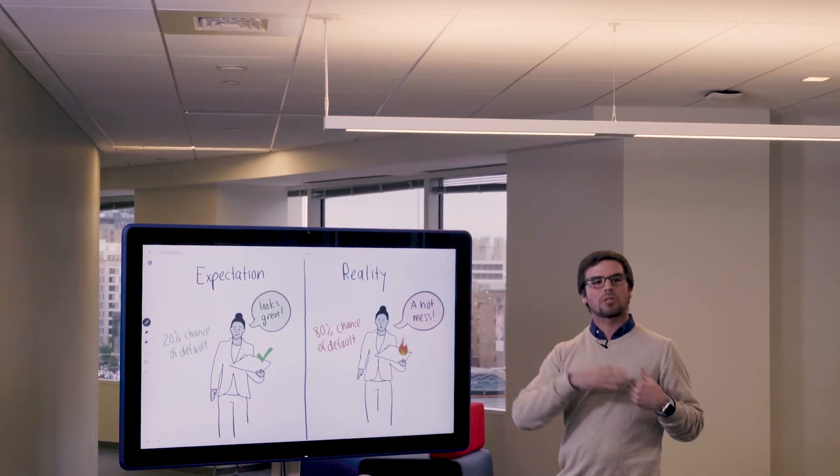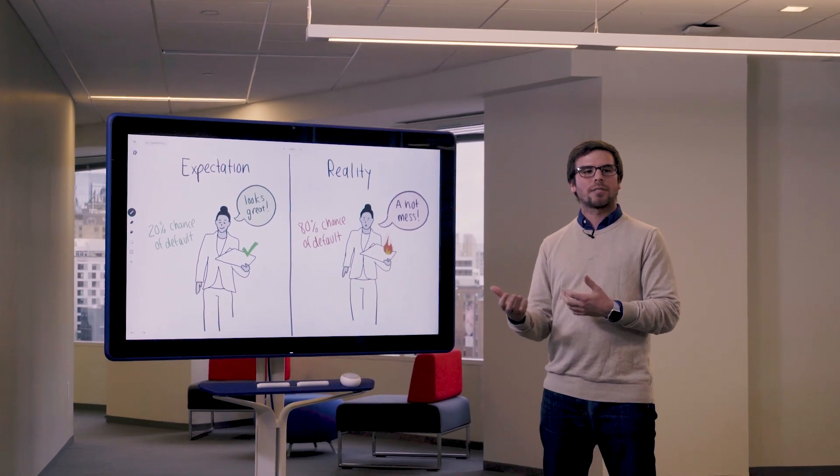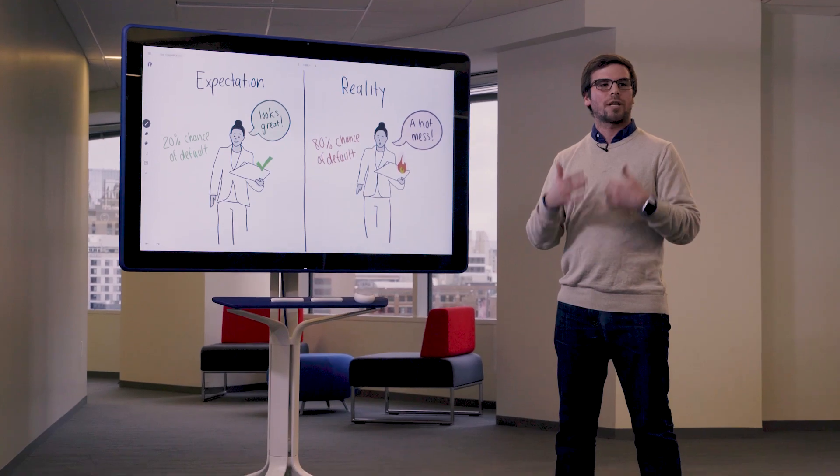But how did all of this happen? It starts with the curation of the original data set. We want to make sure that we're only using information we'd have at the time of prediction and not anything that occurs later than that. So with this specific example, the data set accidentally contained the latest snapshot of all of our loan customers' FICO scores.